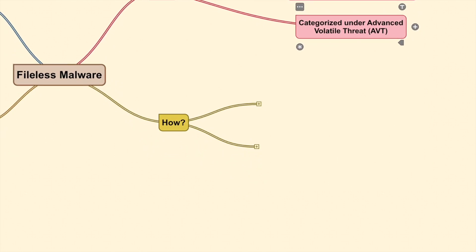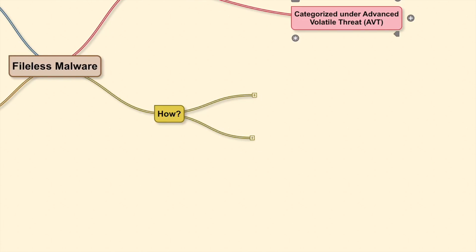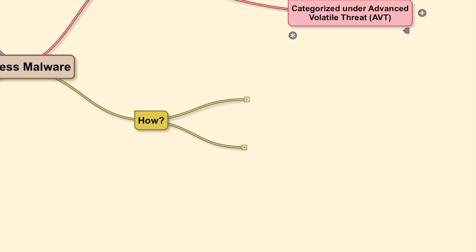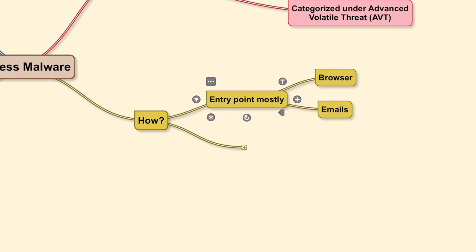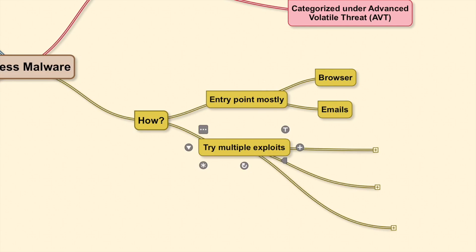So how does the attack happen? As with most threats, the entry point is most often the browser or an email that has a clickbait to lure the user into performing an action. Once the action is performed and the malicious code is loaded into memory, based on its design it will try different alternatives to exploit the machine.